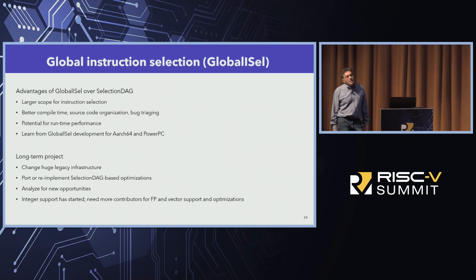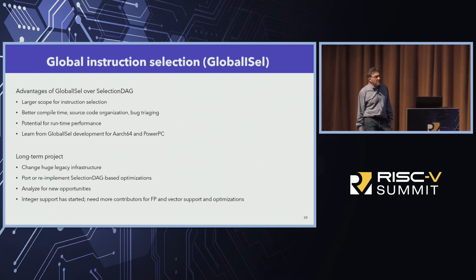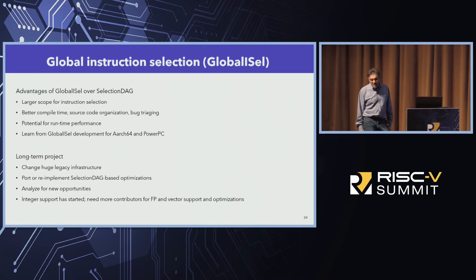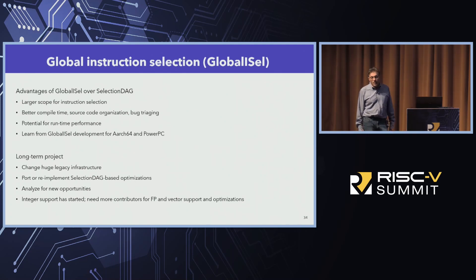More importantly, you need to reimplement many optimizations that are based on the existing SelectionDAG just to be comparable in performance, otherwise we won't be allowed to make the switch. And hopefully during that transition period, we'll need to analyze additional opportunities new for the selection DAG. SiFive started to implement global ISel for integer instructions, so there is room for contribution from other companies to continue with floating point instructions and vectors, and eventually with implementing optimizations.